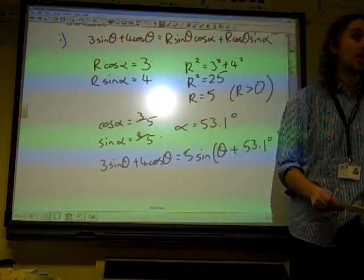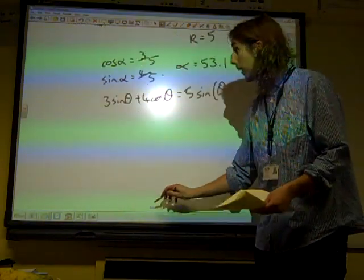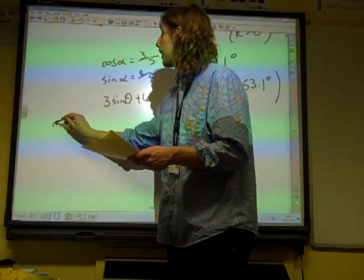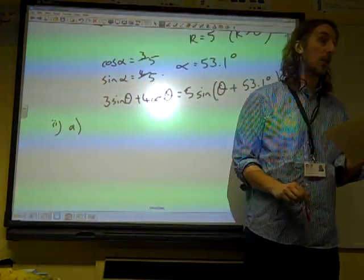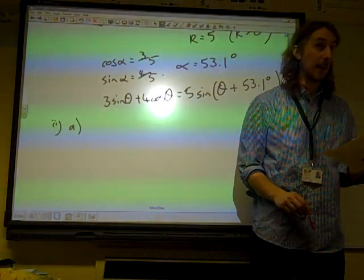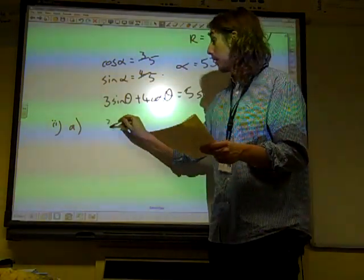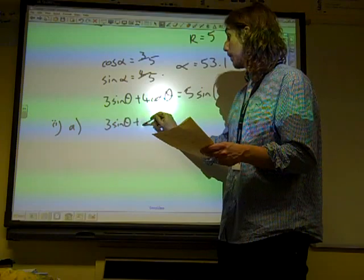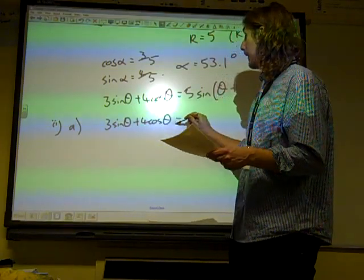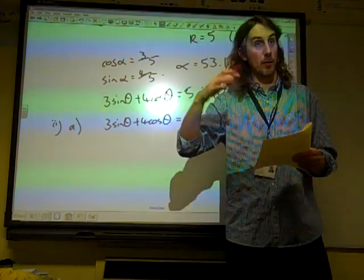Now, hence solve the equation. So we're going to take the hence bits. Part A. The equation, if we rearrange that slightly, it says 3 sine theta plus 4 cos theta equals minus 1, doesn't it, because we've taken one to the other side.